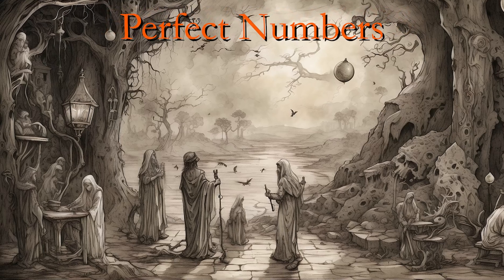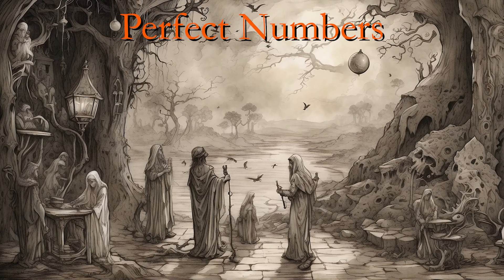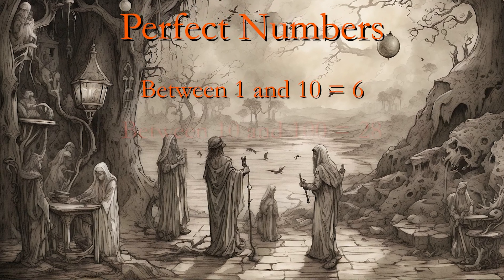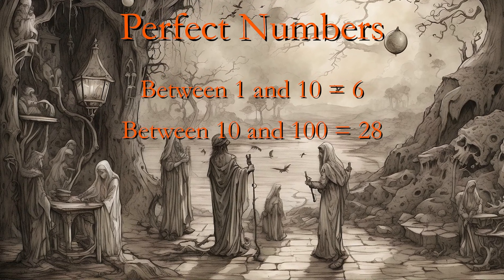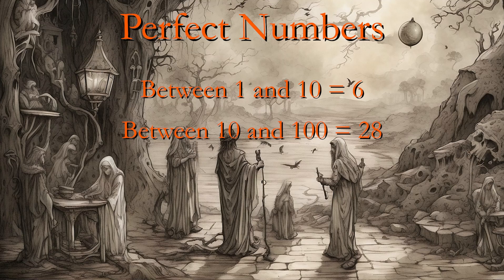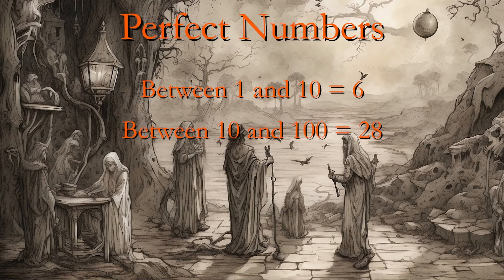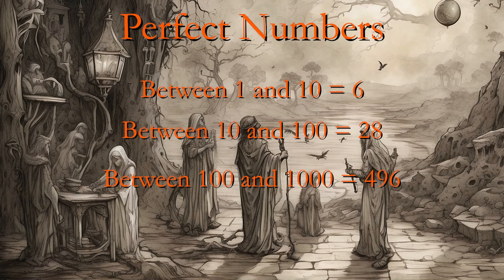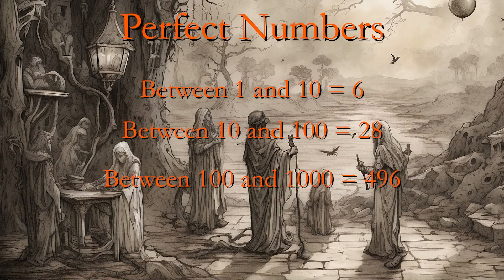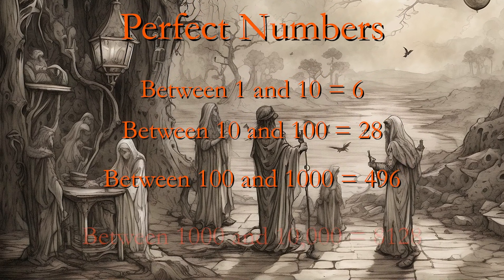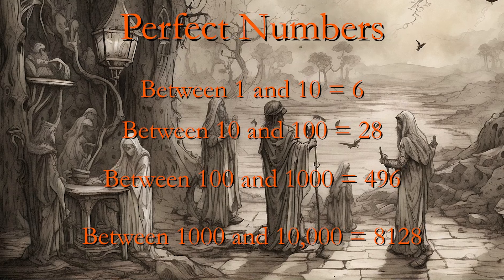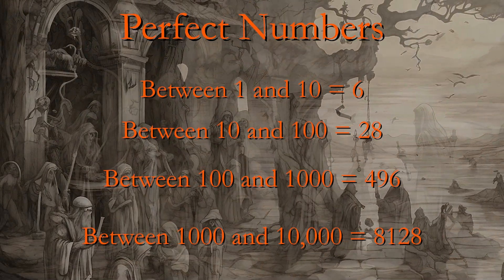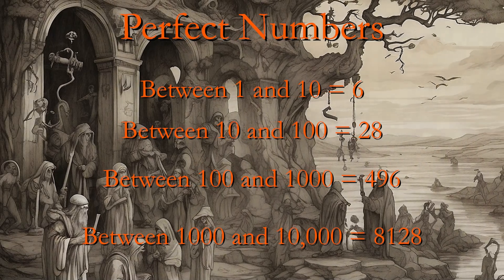There is but one perfect number between one and ten, that is six. Only one between ten and a hundred, that is twenty-eight. Only one between a hundred and a thousand, that is four hundred and ninety-six. And between one thousand and ten thousand, only one, that is eight thousand one hundred and twenty-eight.